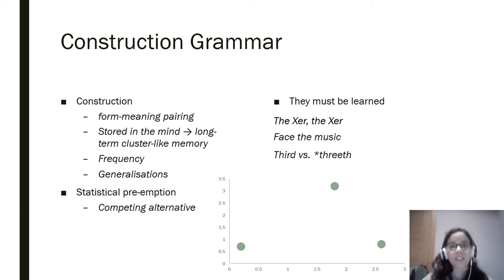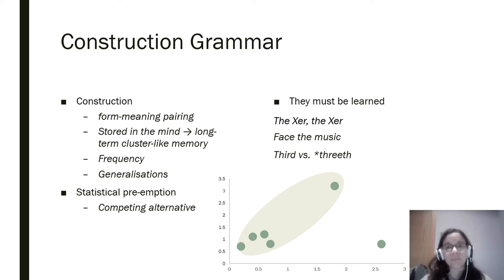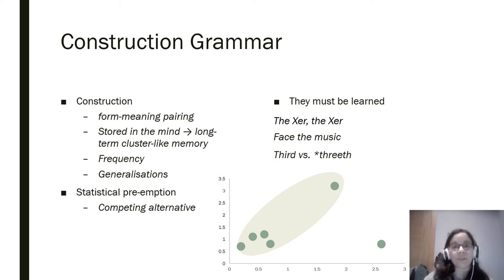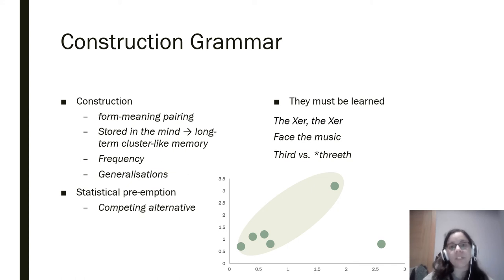So we can tell whether an innovation can be included into the cluster of a construction or not. For example, take these two dots in the figure below. Can you tell whether they can be grouped together? No. But what about now? Frequency is key, but also distribution and variability. Our mind stores all of this. However, it doesn't matter if the instance fits into the existing construction if there is a competing alternative with more frequency. Take, for example, 'third.' It would make more sense to say 'threeth,' as in 'fourth' or 'fifth,' but 'third' is more frequent. And we want to conform to our community conventions, so we use 'third.'